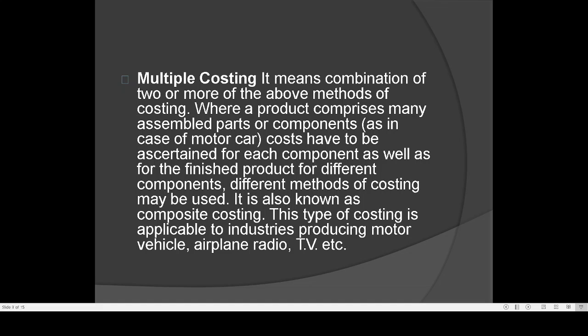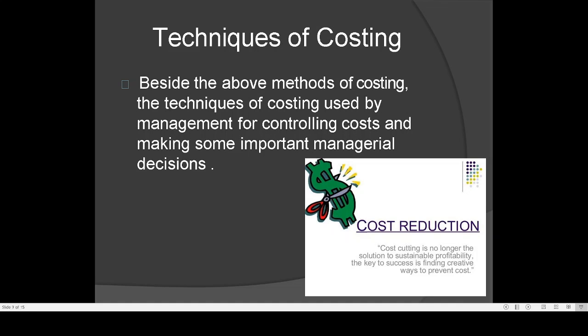Multiple costing means a combination of two or more of the above methods of costing, such as process costing, job costing, and contract costing, used together when components are combined in production.